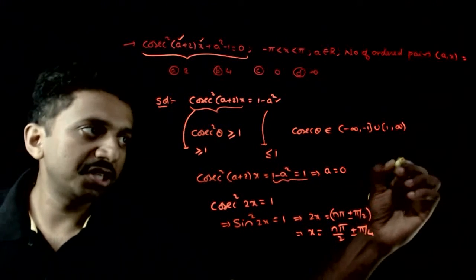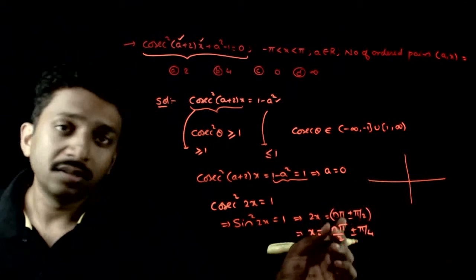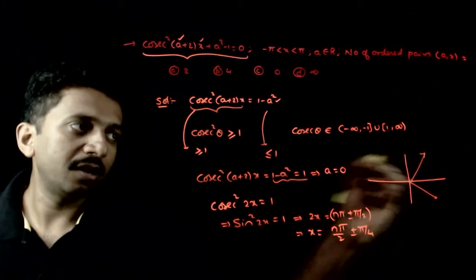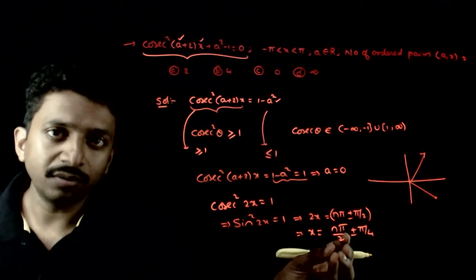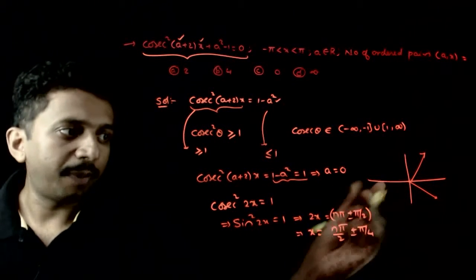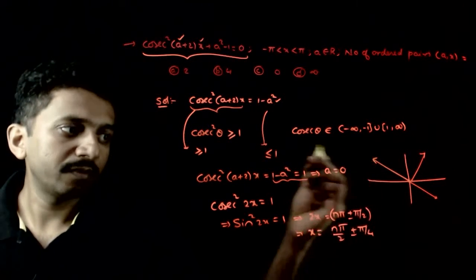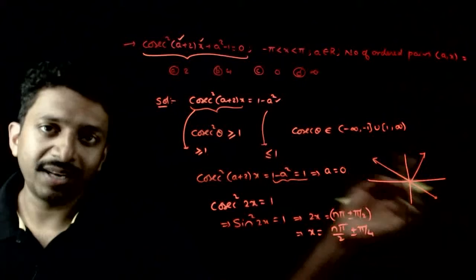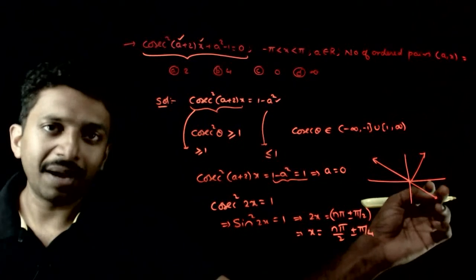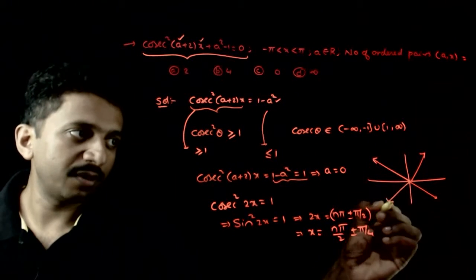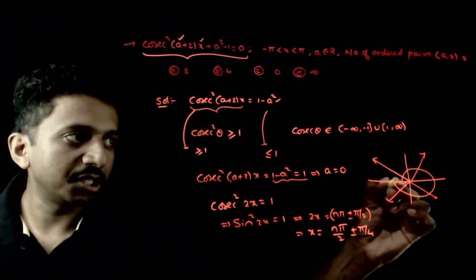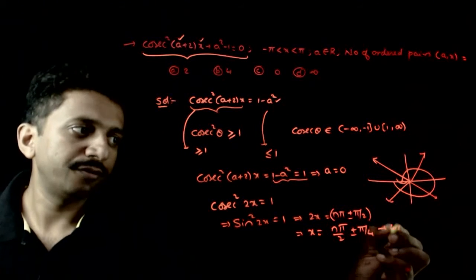We need x in the interval from minus pi to pi. For n = 0: x = −π/4 or π/4. For n = 1: x = π/2 + π/4 = 3π/4 or π/2 − π/4 = π/4. For n = −1: x = −π/2 − π/4 = −3π/4 or −π/2 + π/4 = −π/4. So within one rotation from minus pi to plus pi, there are 4 solutions.